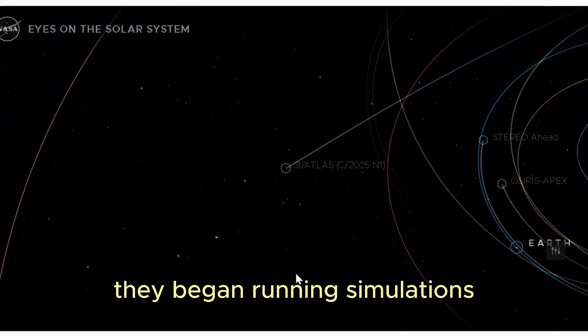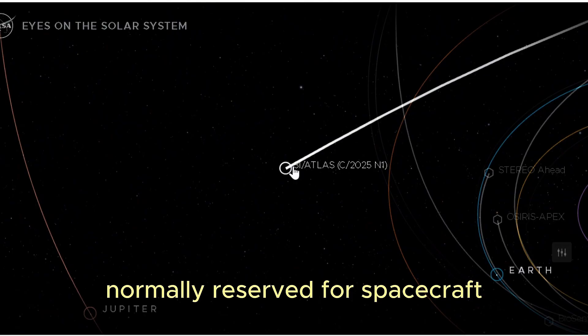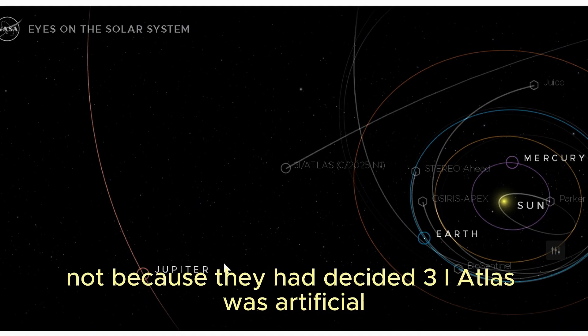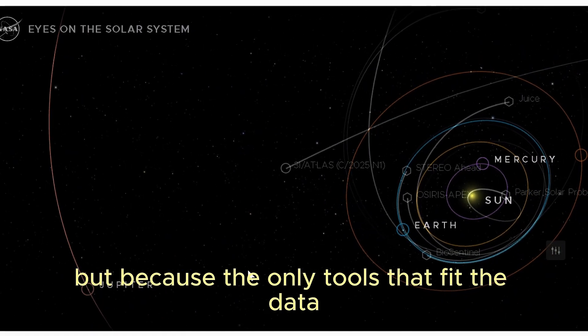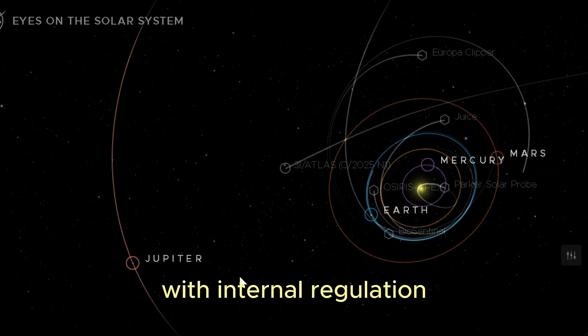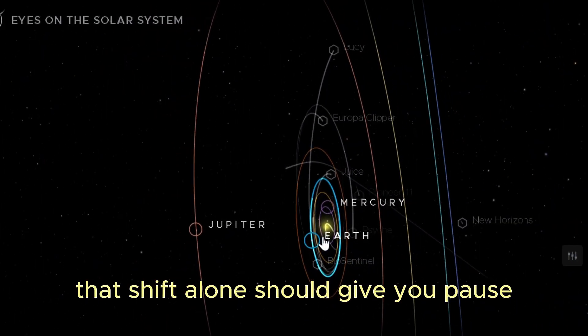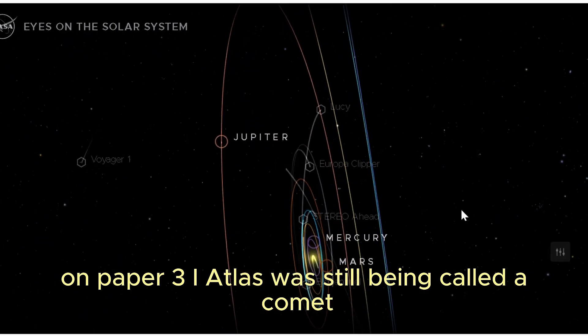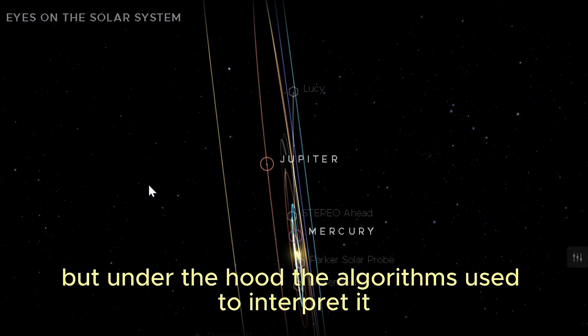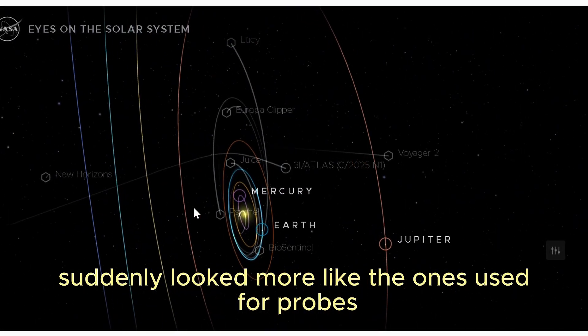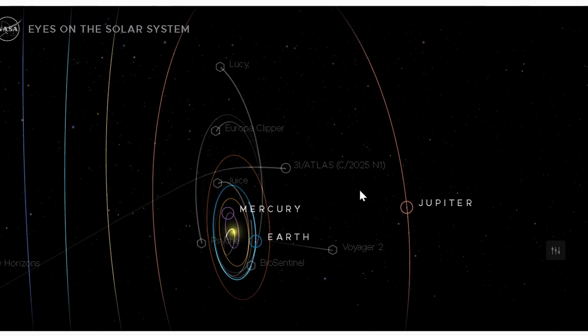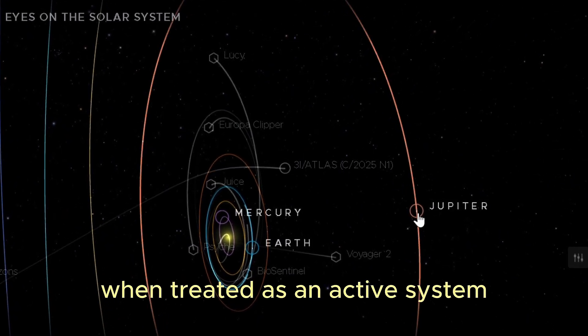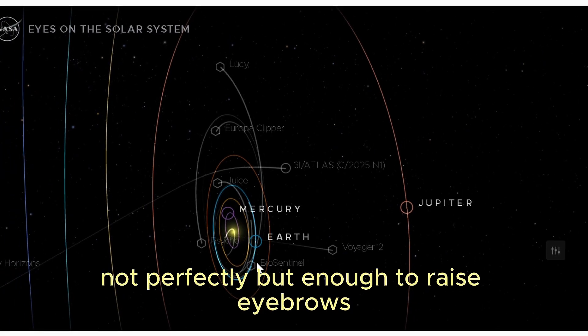So teams tried something rare. They began running simulations normally reserved for spacecraft and controlled systems, not because they had decided 3I Atlas was artificial, but because the only tools that fit the data were tools designed for objects with internal regulation. That shift alone should give you pause. On paper, 3I Atlas was still being called a comet, but under the hood, the algorithms used to interpret it suddenly looked more like the ones used for probes. When treated as a passive fragment, the outbound data refused to make sense. When treated as an active system, the fits began to improve. Not perfectly, but enough to raise eyebrows.